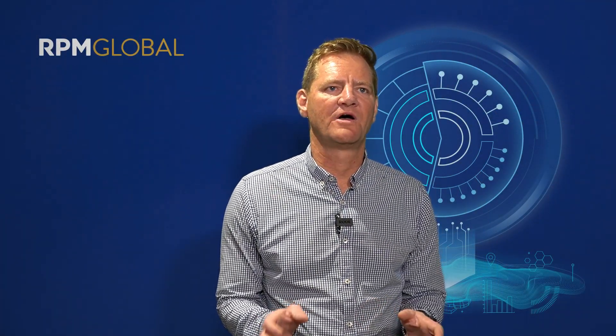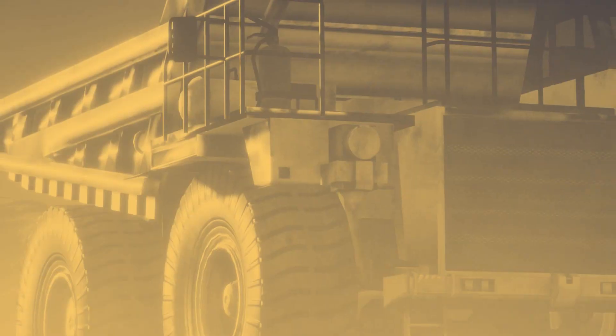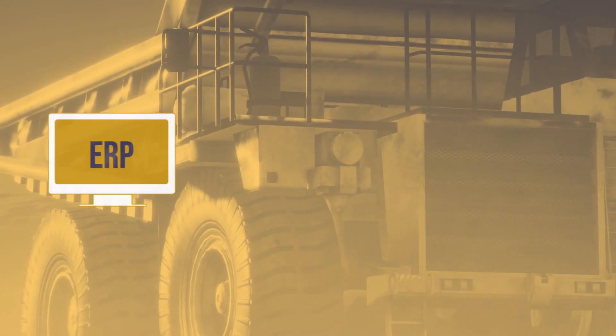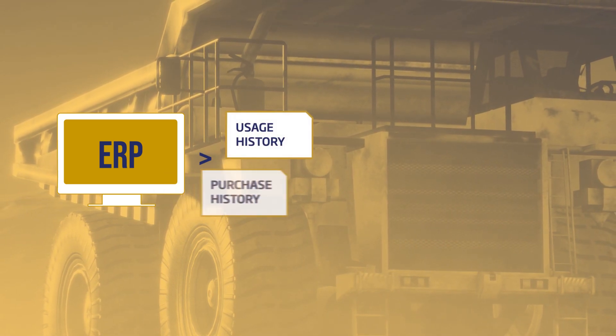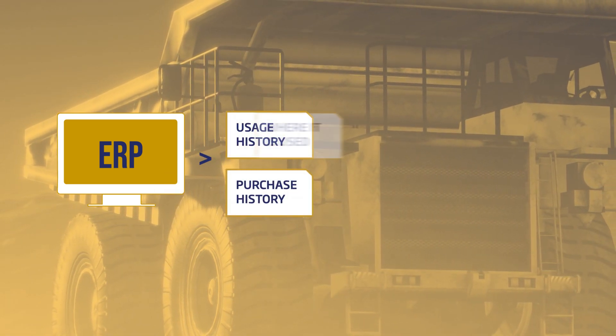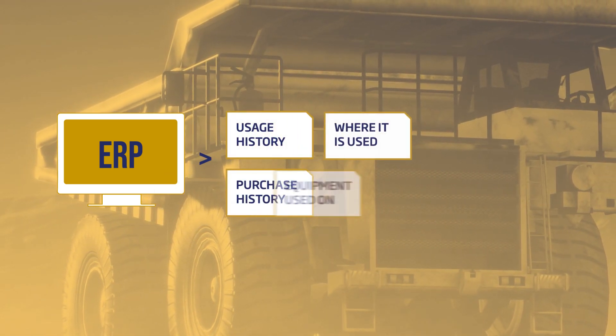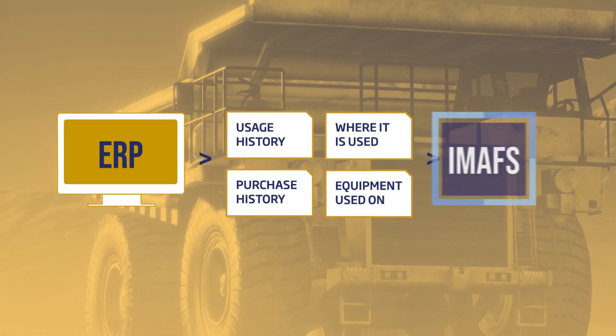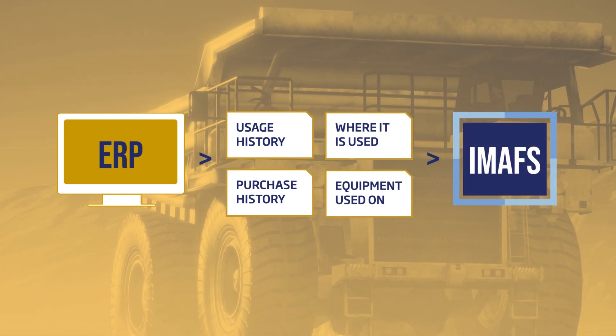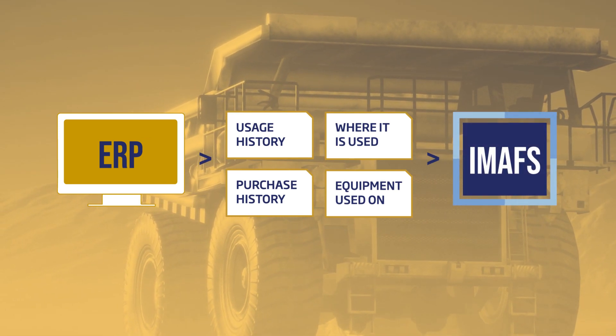What iMAS does is use the information in your ERP system. We extract all your usage history against the part, we extract all your purchase history against the part, we look at where it's used and the equipment it's used on. We use that information to build a profile for that part.